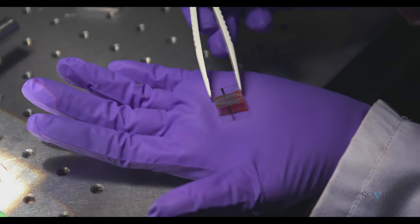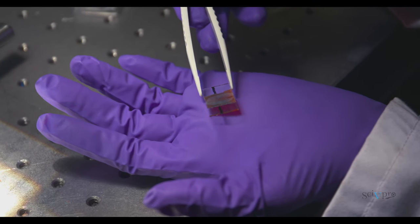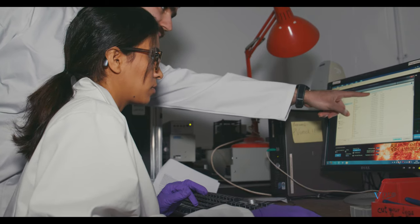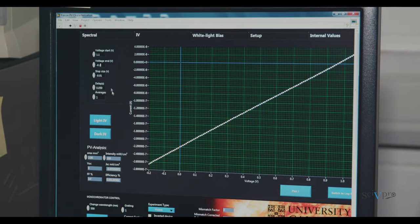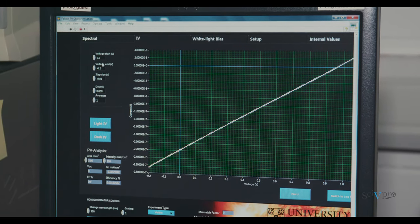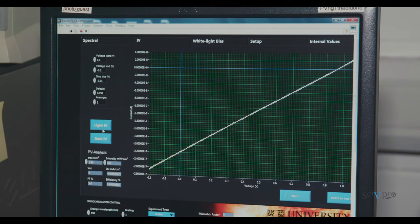The solar cell measured here was fabricated at the X-ray beamline and had been stored under dark ambient conditions for almost two years. Interestingly, the device still works and shows a relatively high open circuit voltage.